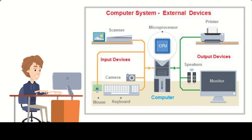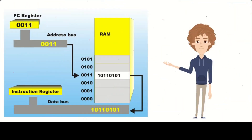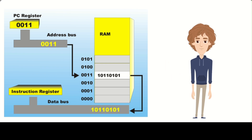For example, when a processor needs to read data from the hard drive, it sends a request through the address bus to the hard drive, which retrieves the data and sends it back to the processor. In summary, the address bus is a critical component of the computer's architecture that enables the processor to access memory and other input-output devices. It consists of a set of wires or lines that carry binary signals and can address a specific location in memory or other devices.